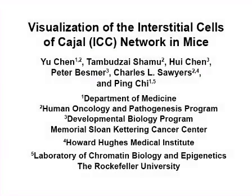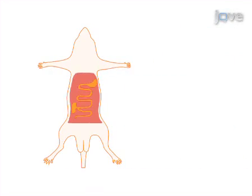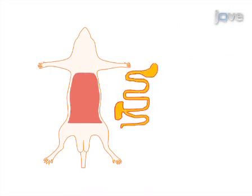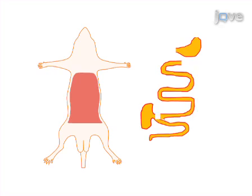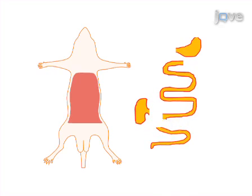The overall goal of this procedure is to visualize ICC networks of the mouse GI tract. This is accomplished by first dissecting and isolating the entire GI tract and separating it into the stomach, small intestine, cecum, and large intestine.